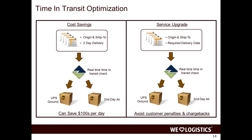Another scenario is upgrading or downgrading the UPS service based on destination. On the left, a cost savings opportunity: a shipment originally scheduled for UPS 2-Day could be downgraded to Ground based on time-in-transit and still arrive on time. On the right, Malibu Boats ships spare parts and wants to ensure customers receive parts within a couple of days. If there's a processing delay, the system automatically upgrades to a premium service to meet that customer commitment.